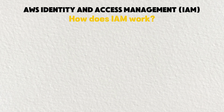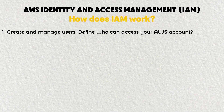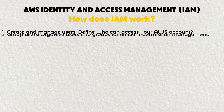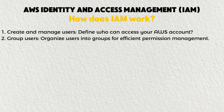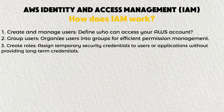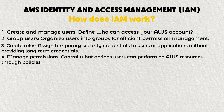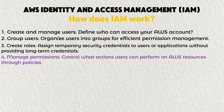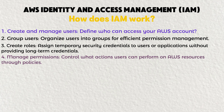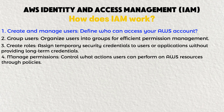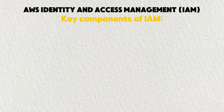Now let's understand how IAM works. First, you create and manage users — defining how users can access your AWS account. Second, you group users by organizing them into groups for efficient permission management. Third, you create roles, which assign temporary security credentials to users and applications without long-term credentials. Fourth, you manage permissions — controlling what actions users can perform on AWS resources through policies. The first step is authentication; the last step is authorization.